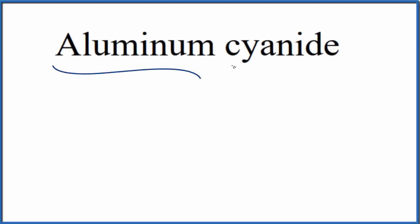To write the formula for aluminum cyanide, let's first write the element symbol for aluminum. That's just A-L.